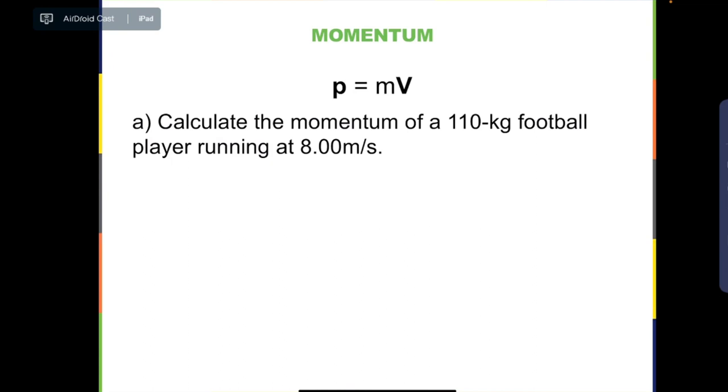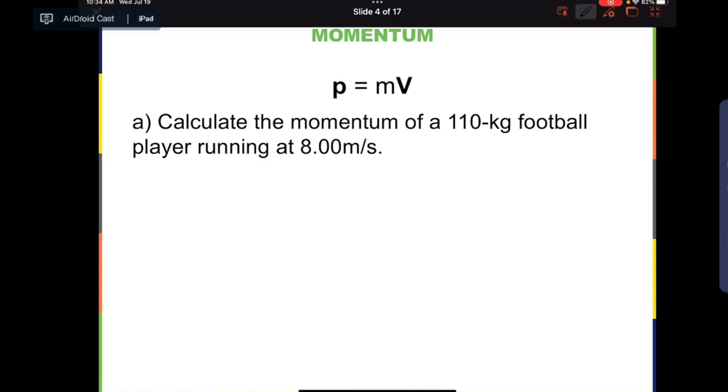Let us make a couple of simple calculations about linear momentum. In this problem, it asks to calculate the momentum of a 110 kg football player running at 8.00 meters per second. We can start by writing the required equation. We know that momentum equals mv. To be specific, I'm going to call this p player, which is equal to mv.